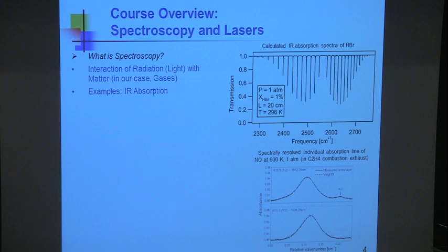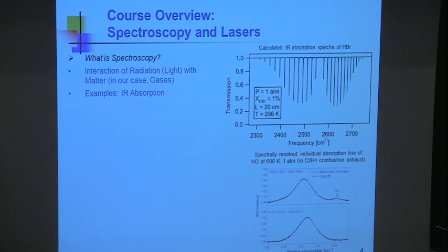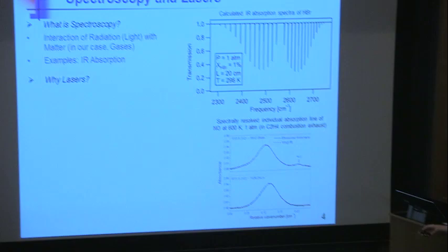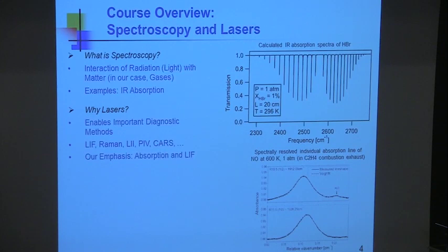In this case it's nitric oxide at 600 degrees Kelvin. The point is that these lines — sometimes called transitions — have shape. We can use that information to our advantage now that we have lasers in order to make quantitative measurements. It's the shape and the amplitude of these features that we deal with when trying to quantify the gas we're probing.